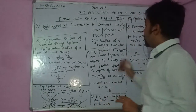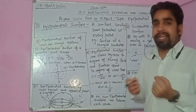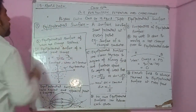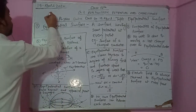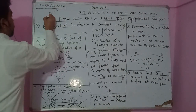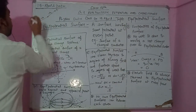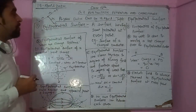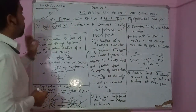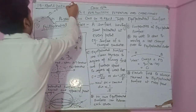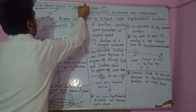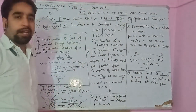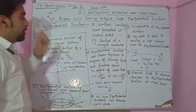Now let us take an example of an equipotential surface. Consider a point charge plus Q. At distance r, the potential at point A, point B, and point C — all at the same distance r — will have the same value. This is because the formula for potential due to a point charge is V = (1/4πε₀) · Q/r, which depends only on r.